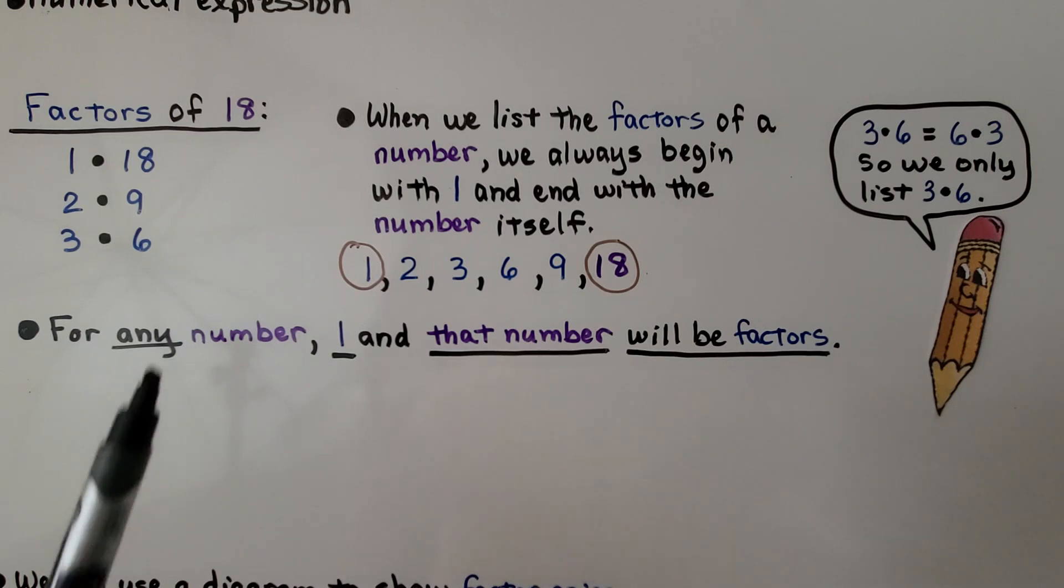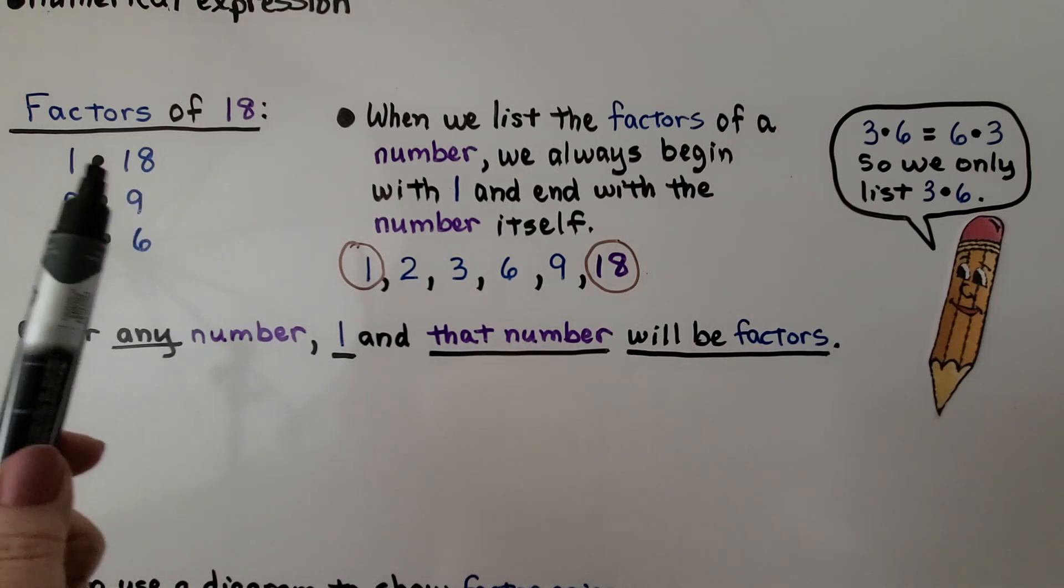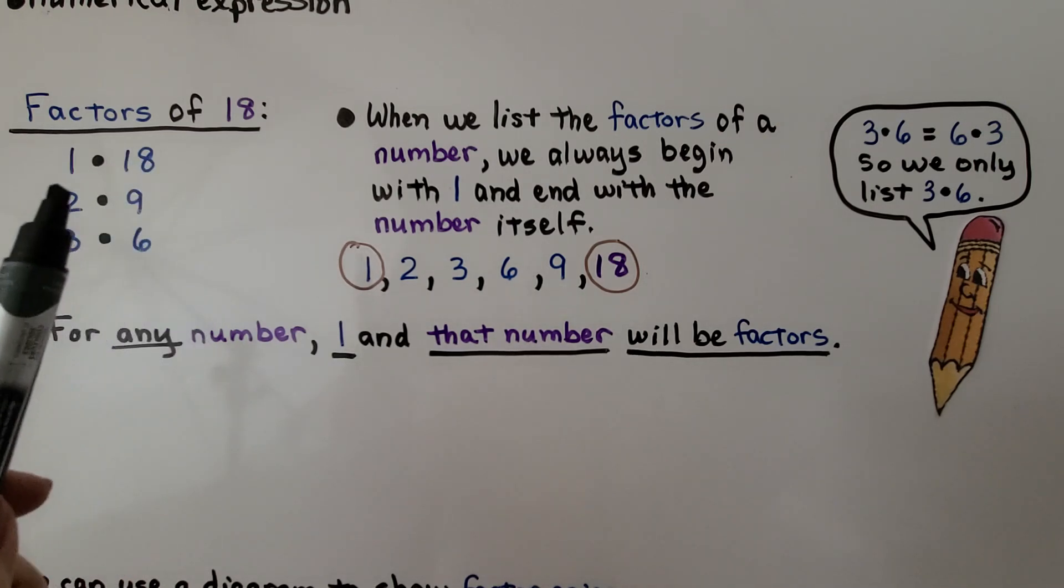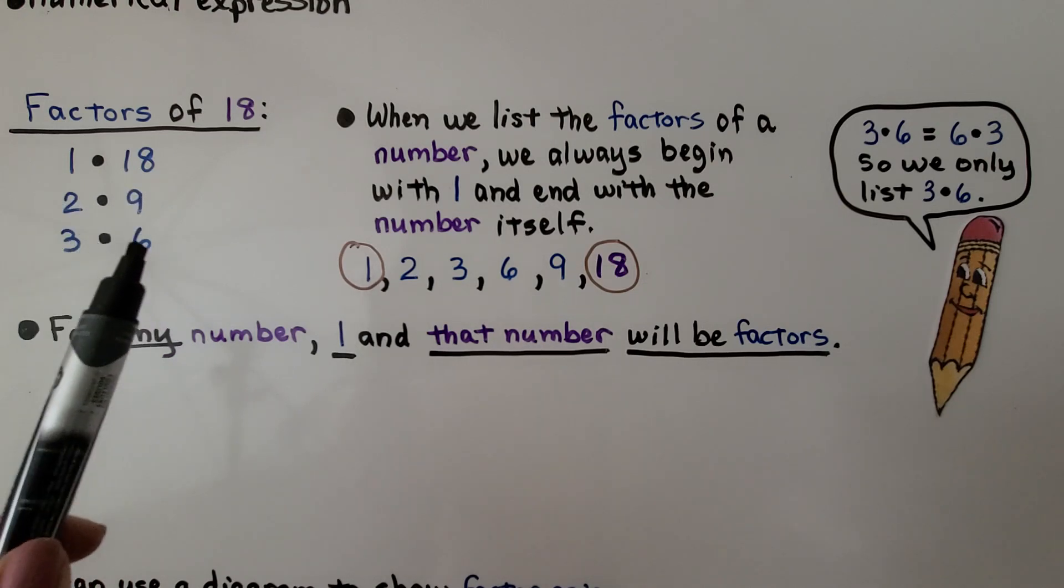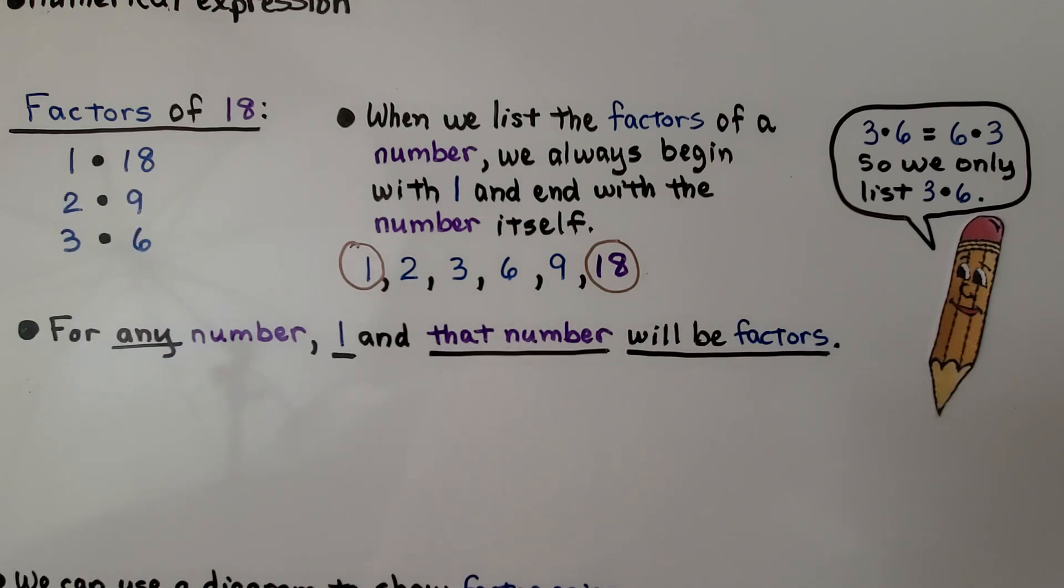The factors of 18 are 1 and 18 because 1 times 18 is 18. We have a 2 and a 9 and a 3 and a 6. When we list the factors of a number, we always begin with 1 and end with the number itself.